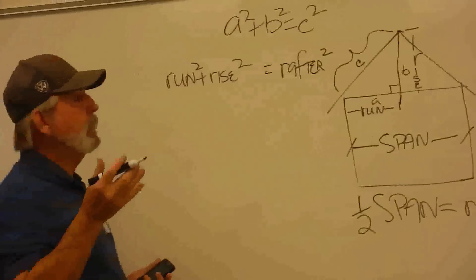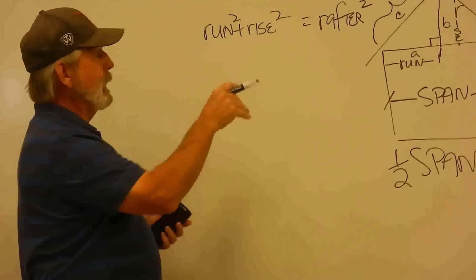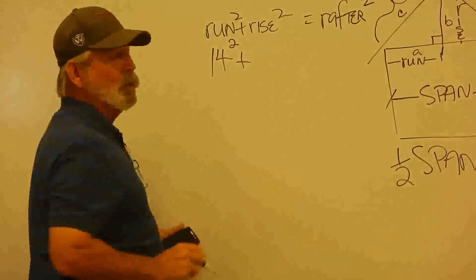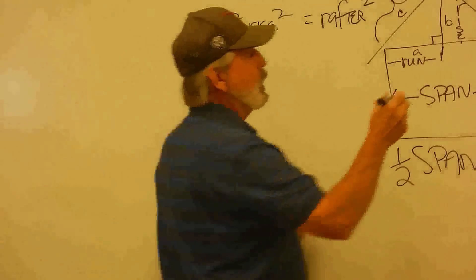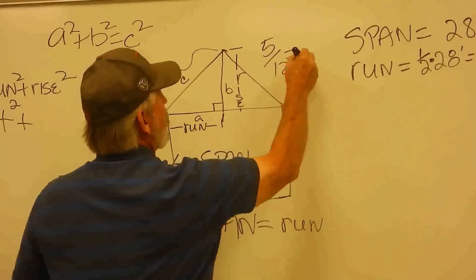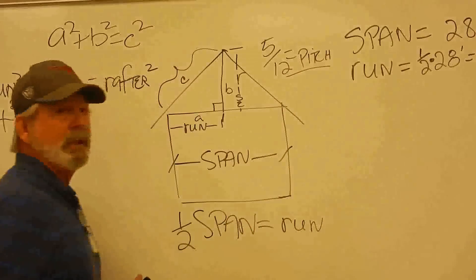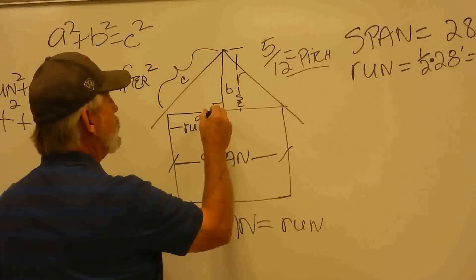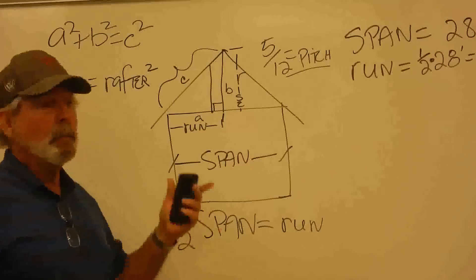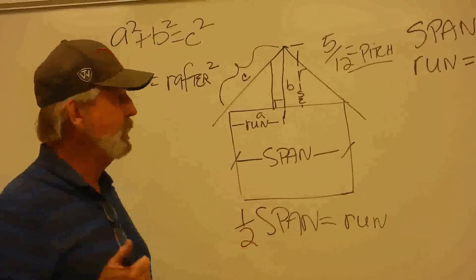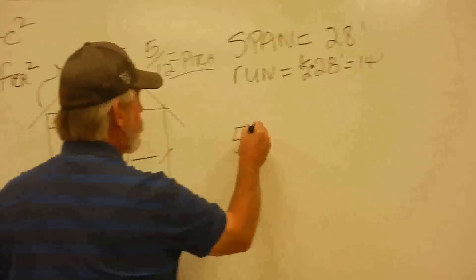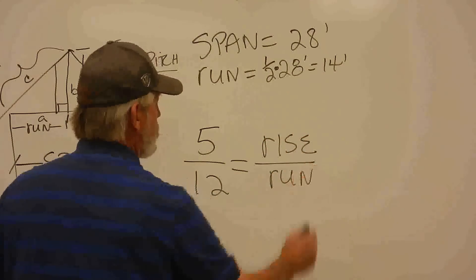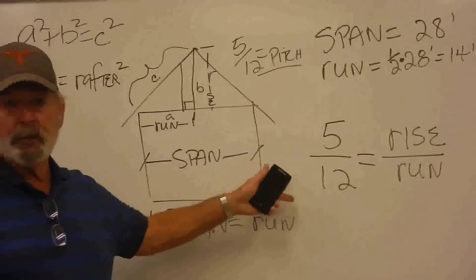Any time I have a value, a numerical value for one of my words, then I come over here and I substitute in that value into this formula. So now I've got my run is 14 squared plus, I don't know what my rise is. But the architect will tell us on the plans exactly what our pitch is. So we don't know what our pitch is at 14 feet. Right here is 12. We know that at 12 feet, we're going up 5 feet. But we're going over here 14 feet. So our rise is going to change a little bit. The way that we figure this out is we work the formula.